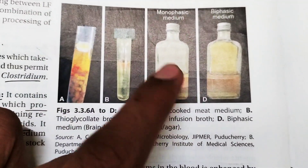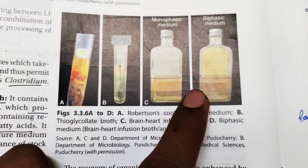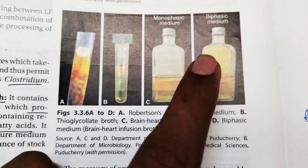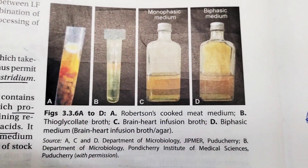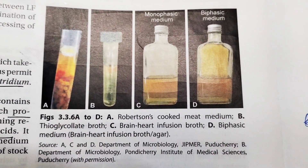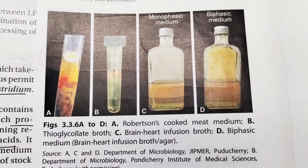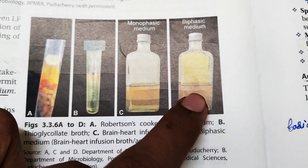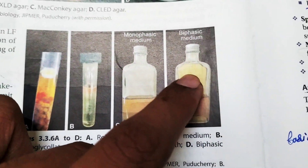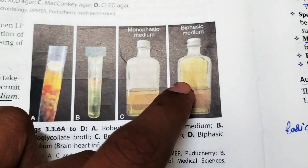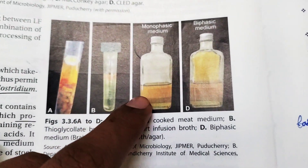Thioglycolate broth is also shown here. The monophasic medium is brain heart infusion broth, and the biphasic medium is also brain heart infusion broth — also known as Castaneda's medium. In Castaneda's medium both liquid and solid phases are present because some amount of agar has been added, so part is liquid and part is solid.